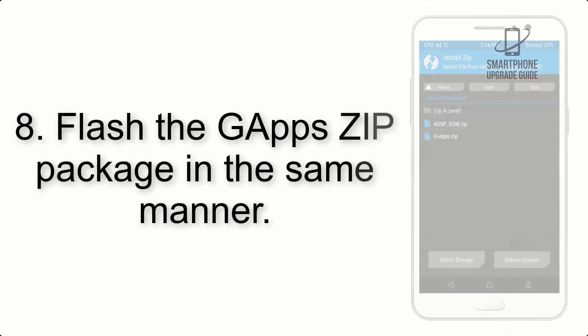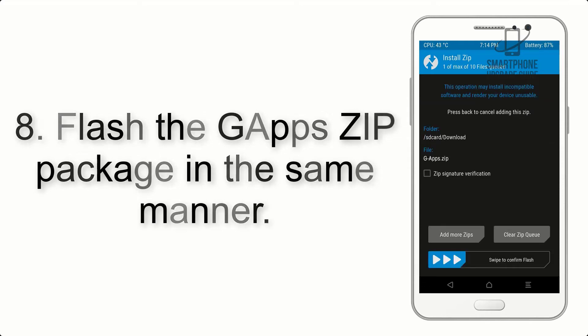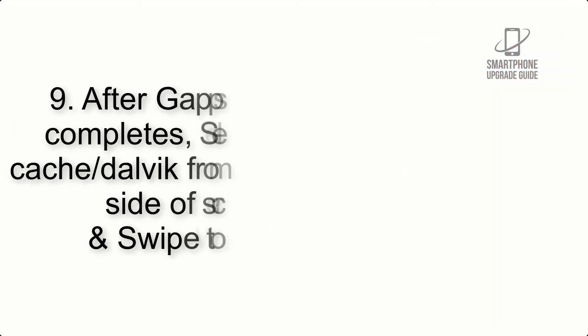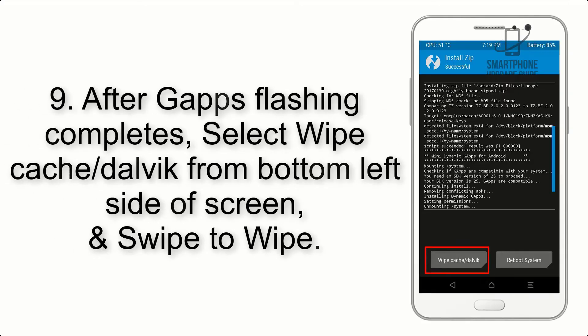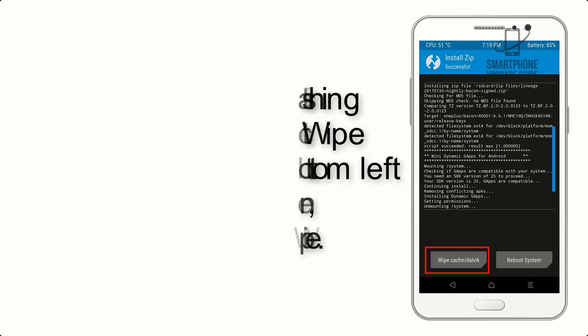Step 8: Flash the gapps ZIP package in the same manner. Step 9: After gapps flashing completes, select Wipe Cache, swipe to the bottom left side of the screen, and swipe to wipe.